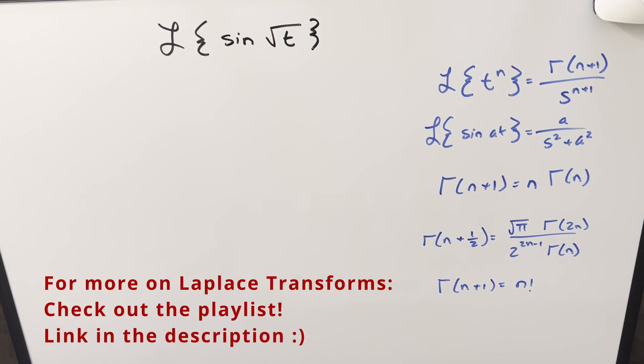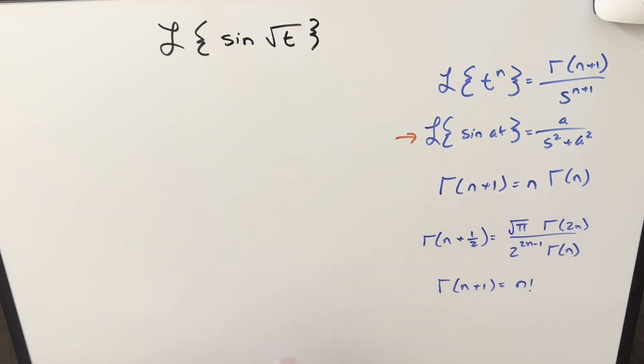Now, at first you might be wondering, why don't we just use our Laplace transform formula right here? Why don't we just use this, plug in, and finish it off? Well, the problem is square root of t. So this right here, this is just like t to the first power. So this formula right here is not really going to work for us. So we're not going to be using this one in this video.